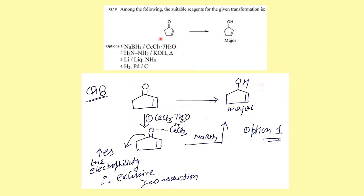This is probably one of the easiest questions, directly from Karthurs. To selectively reduce the carbonyl of an alpha-beta unsaturated carbonyl, sodium borohydride with cesium carbonate is one of the best methods. Cesium coordinates with the carbonyl, increasing the electrophilicity of the carbonyl carbon, so hydride preferentially attacks that carbon instead of undergoing conjugate addition. Option two (Birch reduction) is unselective; hydrogenation would reduce the double bond. The correct option is option one.